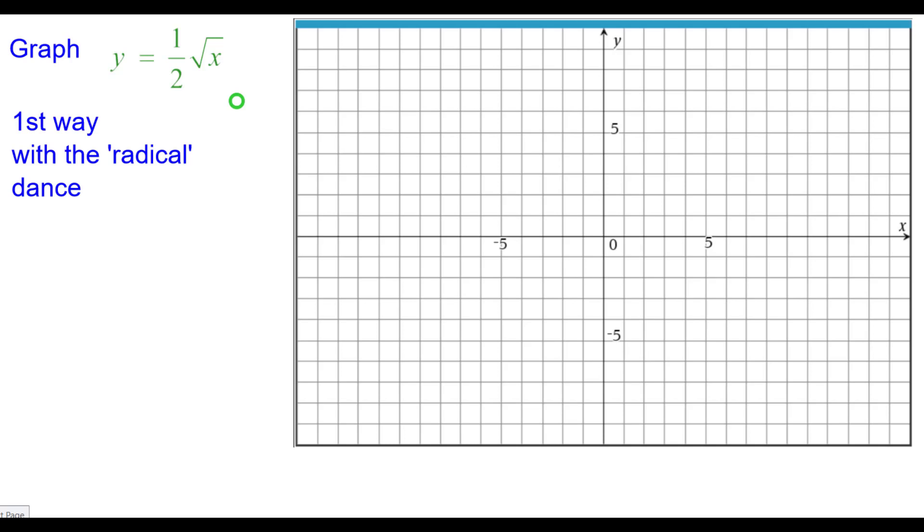The first way is with the radical dance. Normally we start at the origin and here we will also because a half times the square root of 0 is 0.